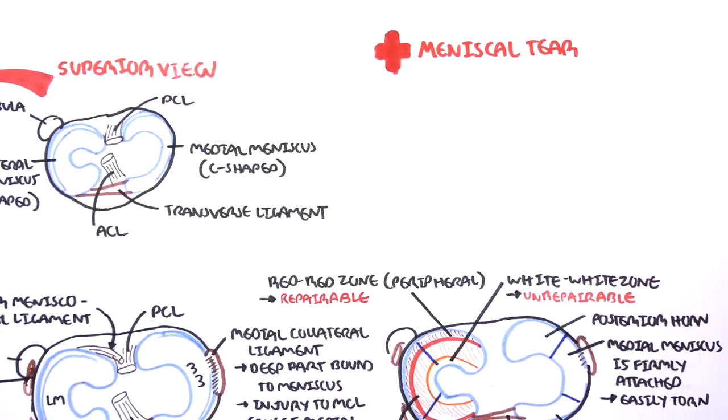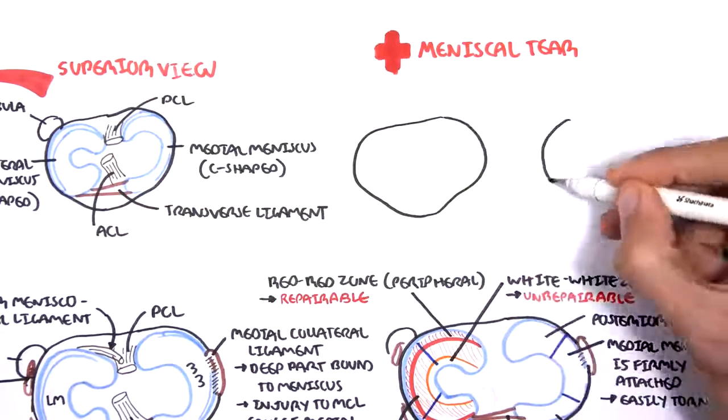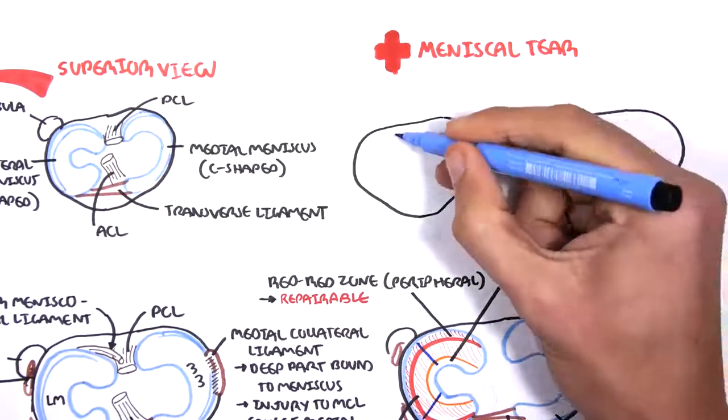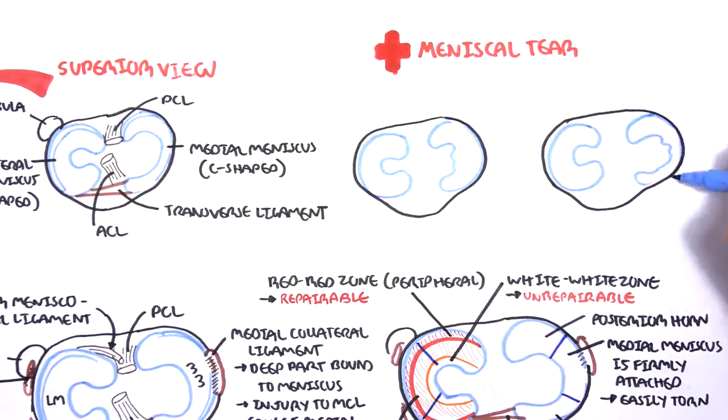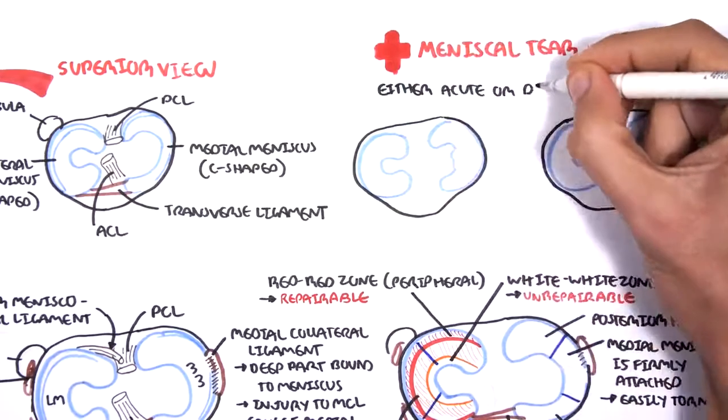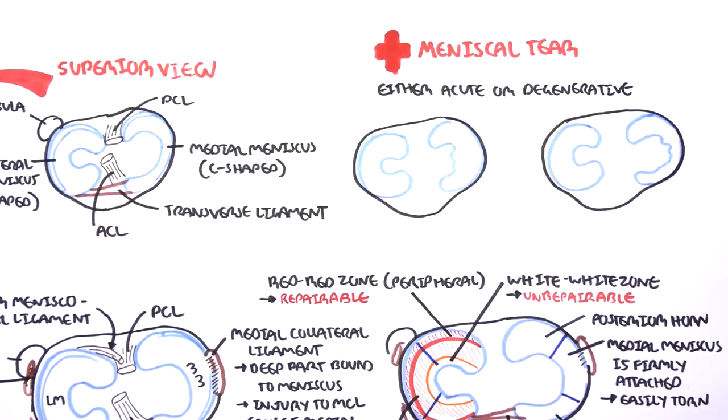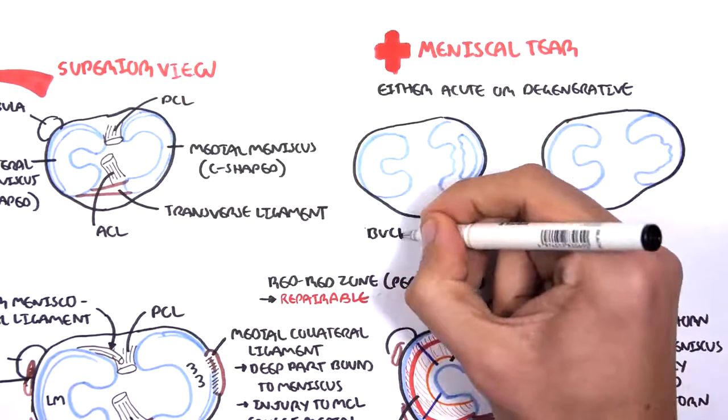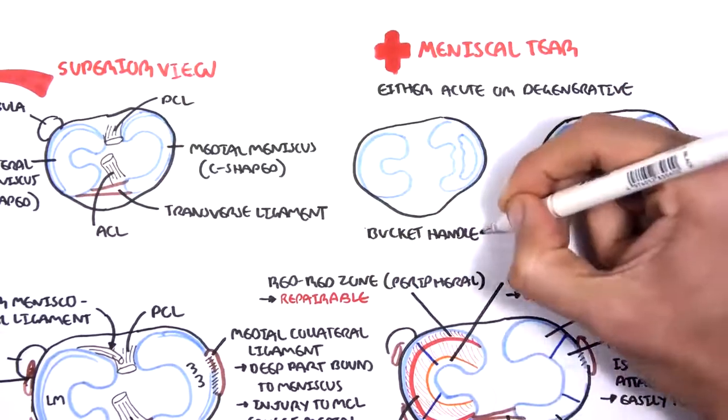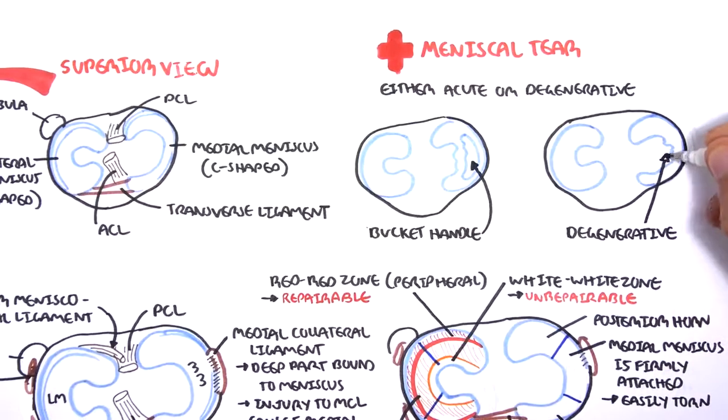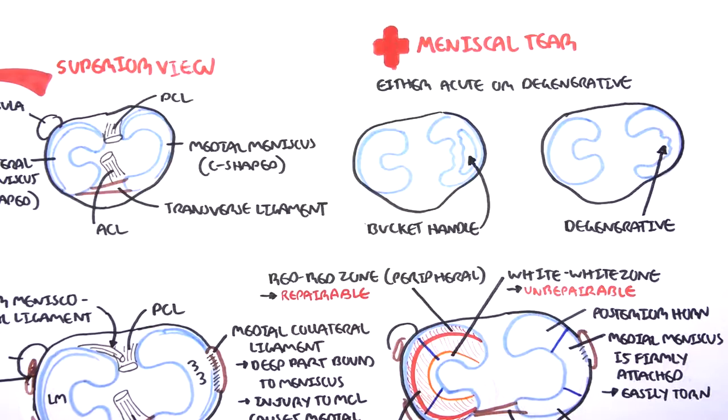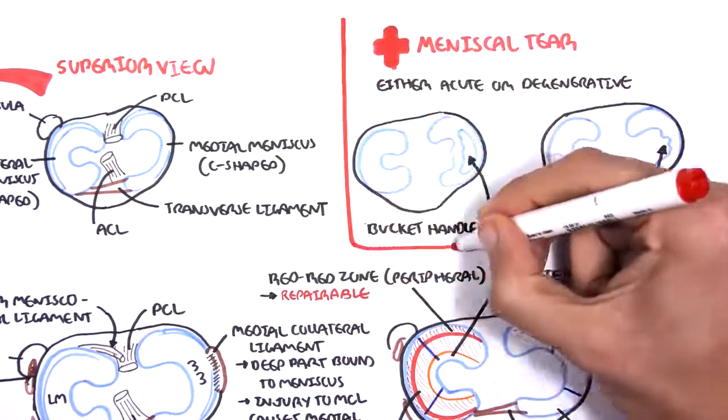So clinical relevance of the meniscus, well meniscal tears are very common. It can occur in healthy young active adolescents or in adults and the elderly. So we can say meniscal tears can either be acute or degenerative. Acute meniscal tears are usually bucket handle tears from longitudinal tears. Degenerative meniscal tears are from old age and is due to wear and tear with accompanying osteoarthritis. It is a complex type of tear which may involve other things.